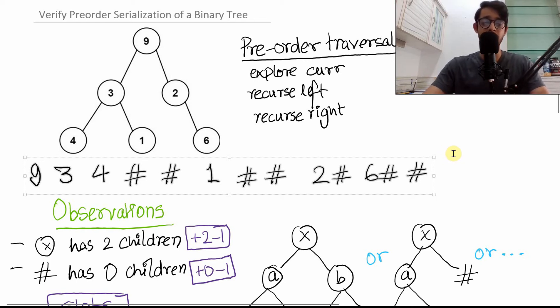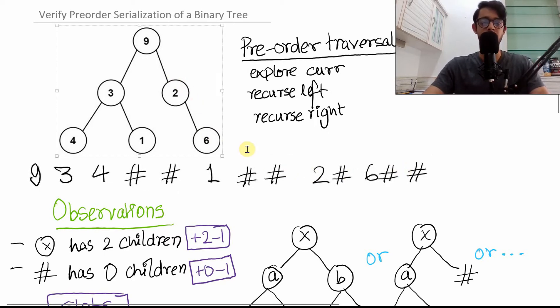Now, it may be an invalid string, which means that you cannot possibly recreate a tree like this from it. One thing to keep in mind is that the traversal or this string is based on the preorder traversal of a tree.